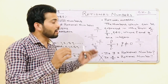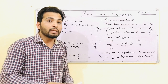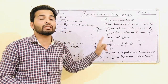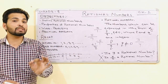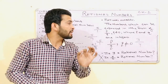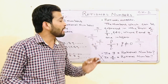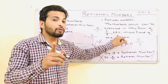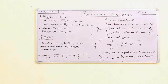You must learn the definition of rational numbers: the numbers which can be represented in the form of P upon Q, where Q is not equal to 0 and P and Q are integers. Very good. Thank you.